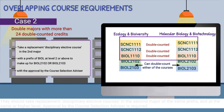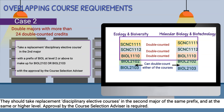Students should take replacement disciplinary elective courses in the second major of the same prefix and at the same or higher level. Approval by the course selection advisor is required.